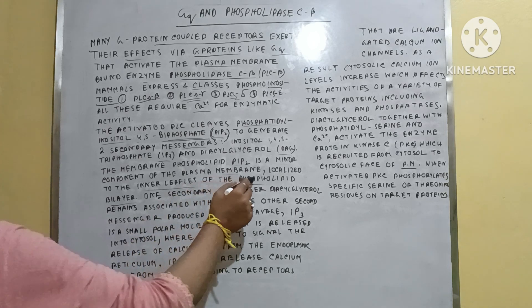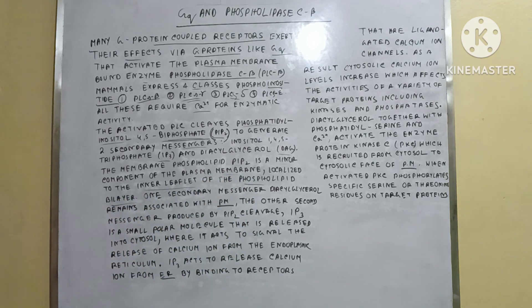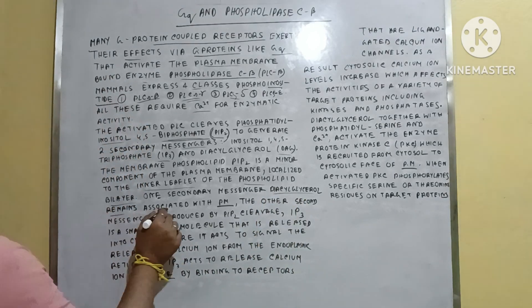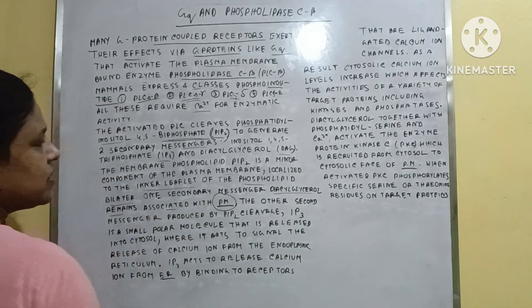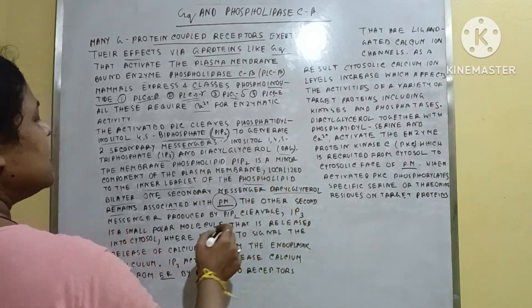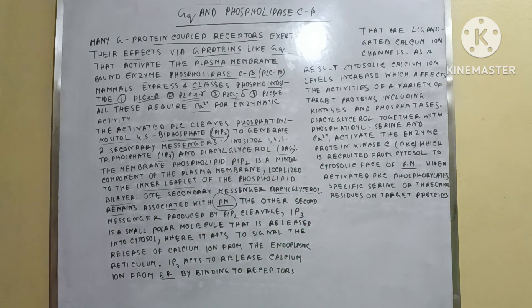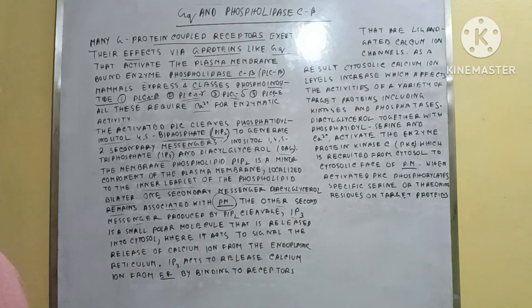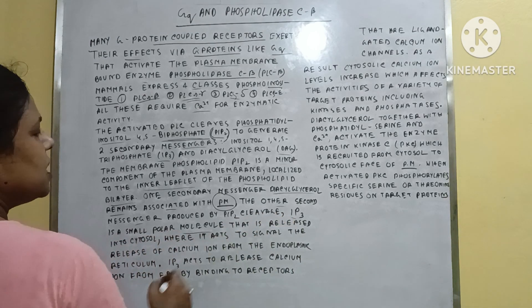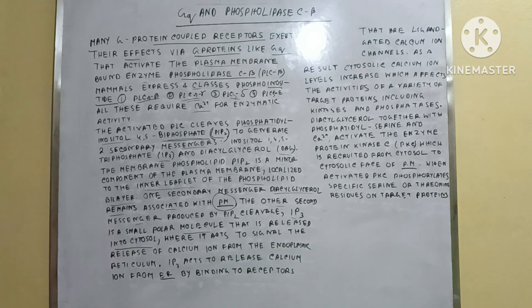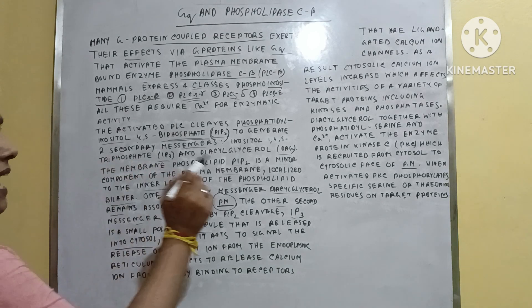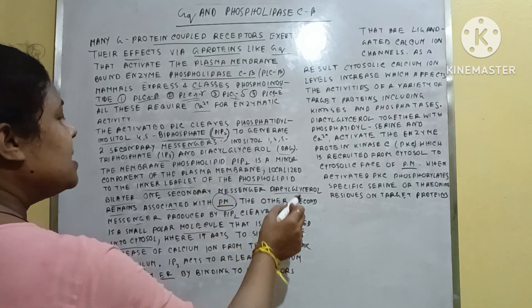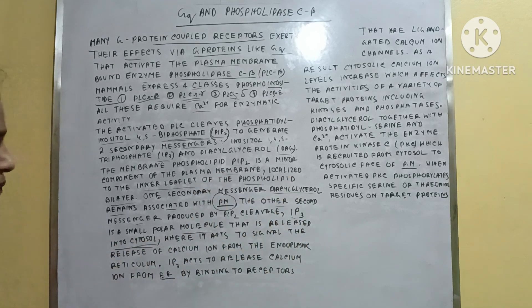One secondary messenger, DAG (diacylglycerol), remains associated with the plasma membrane. The other secondary messenger, IP3, is a small polar molecule that is released into the cytosol. DAG remains in the plasma membrane but IP3 is released into the cytosol.